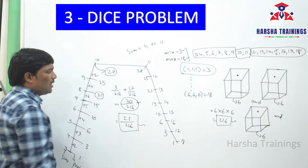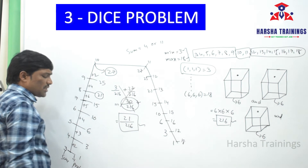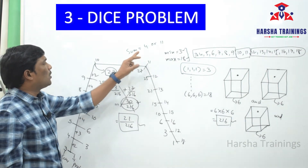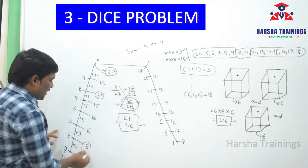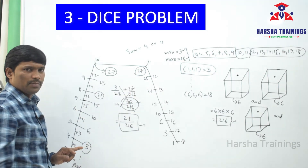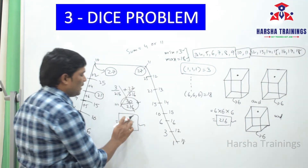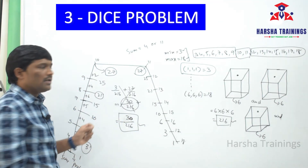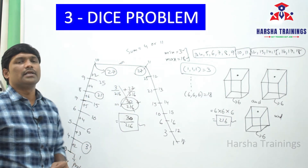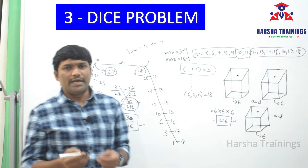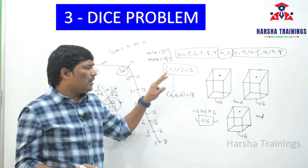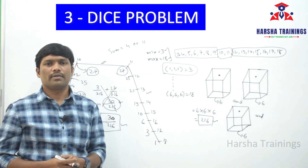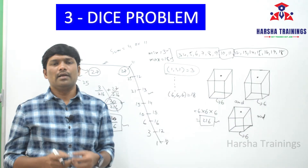Just easy to memorize, guys. The main answer frame is 30 by 216. So find out the sum of 4 or 11 — 4 has 3 possibilities, 11 has 27 possibilities, 27 plus 3 is 30, so 30 by 216 is the answer. Just remember this diagram for three dice problems — one dice, two dice, and three dice problems. So thank you for being here, please subscribe to our YouTube channel.